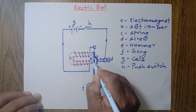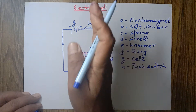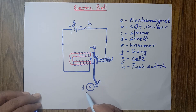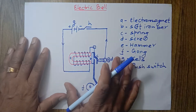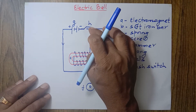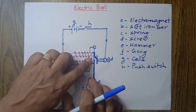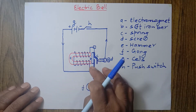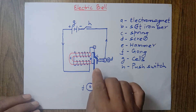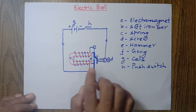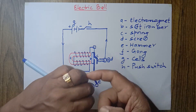Electric current does not pass through the soft iron bar because there is an insulating material which separates the spring from the soft iron bar. That is why electric current does not reach the hammer or the gong either. The current passes through the spring to the screw, and from the screw to the push switch, then to the negative terminal. When the circuit becomes complete, the electromagnet gains magnetism and attracts the soft iron bar. When the soft iron bar is attracted, the hammer attached to it also moves forward and hits the gong, producing the sound of the bell. In the meantime, since the spring also moves forward with the soft iron bar, the spring and screw become disconnected.